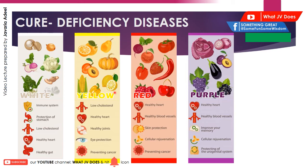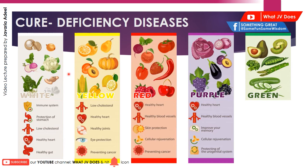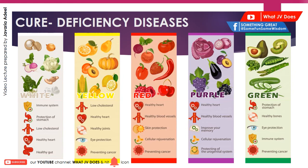The green ones — which include peas, kiwi, and cucumbers — are good for protection of the stomach, healthy bones, eye protection, immune system, and preventing cancer.